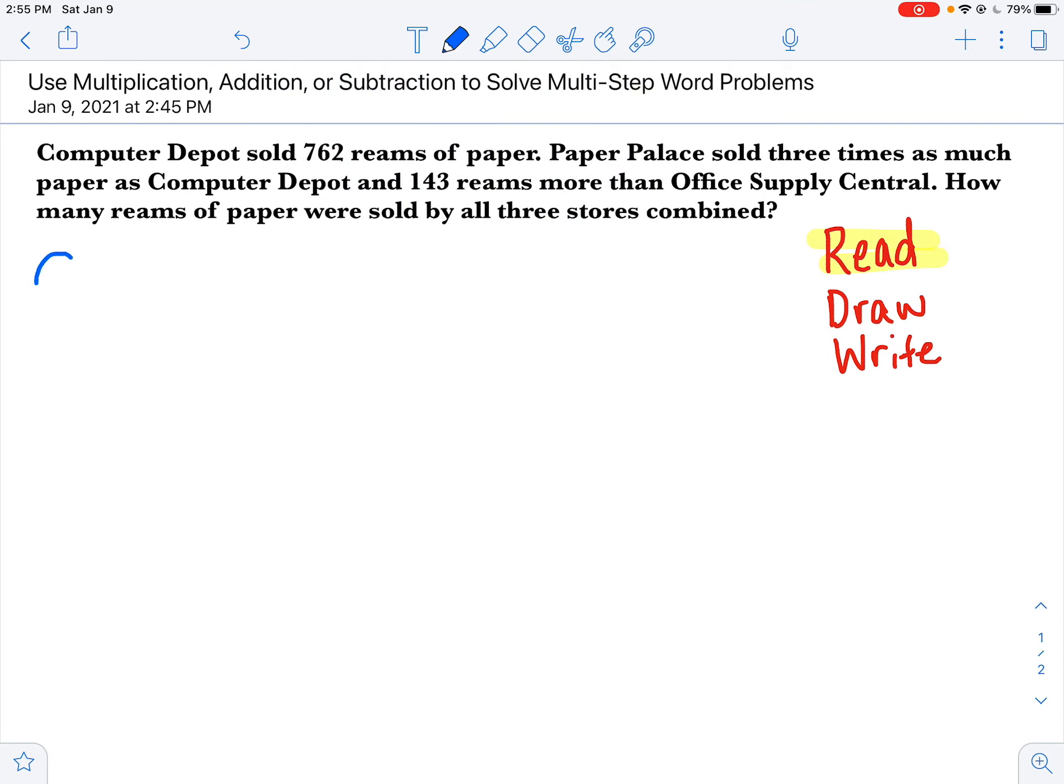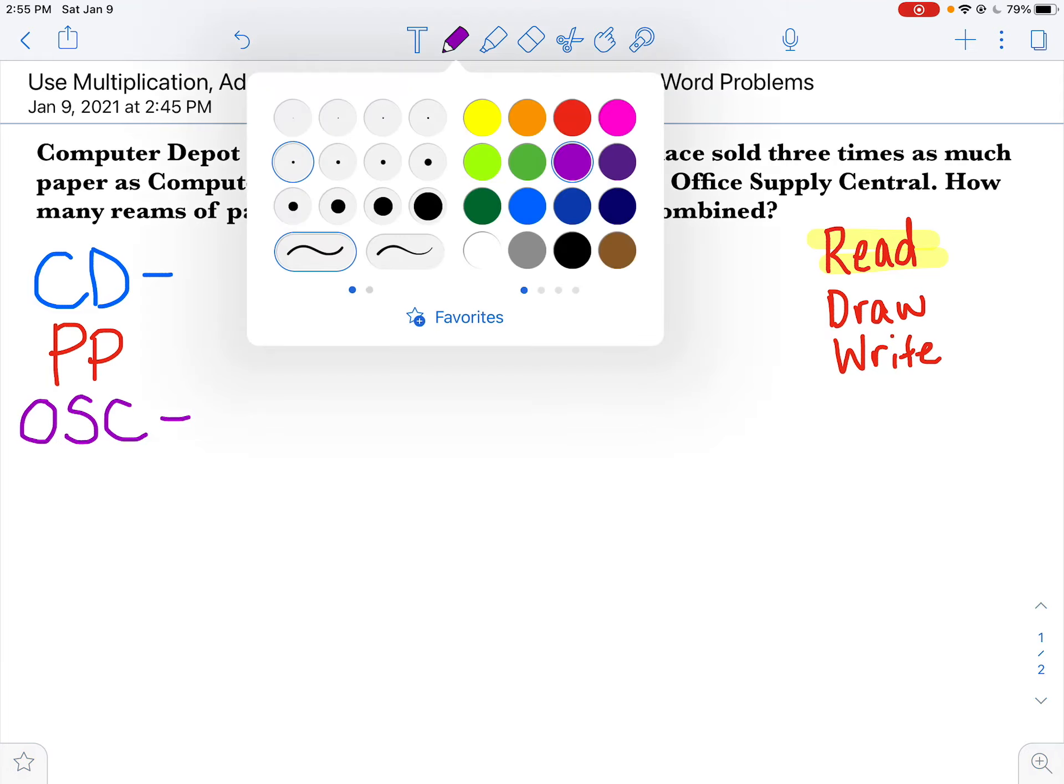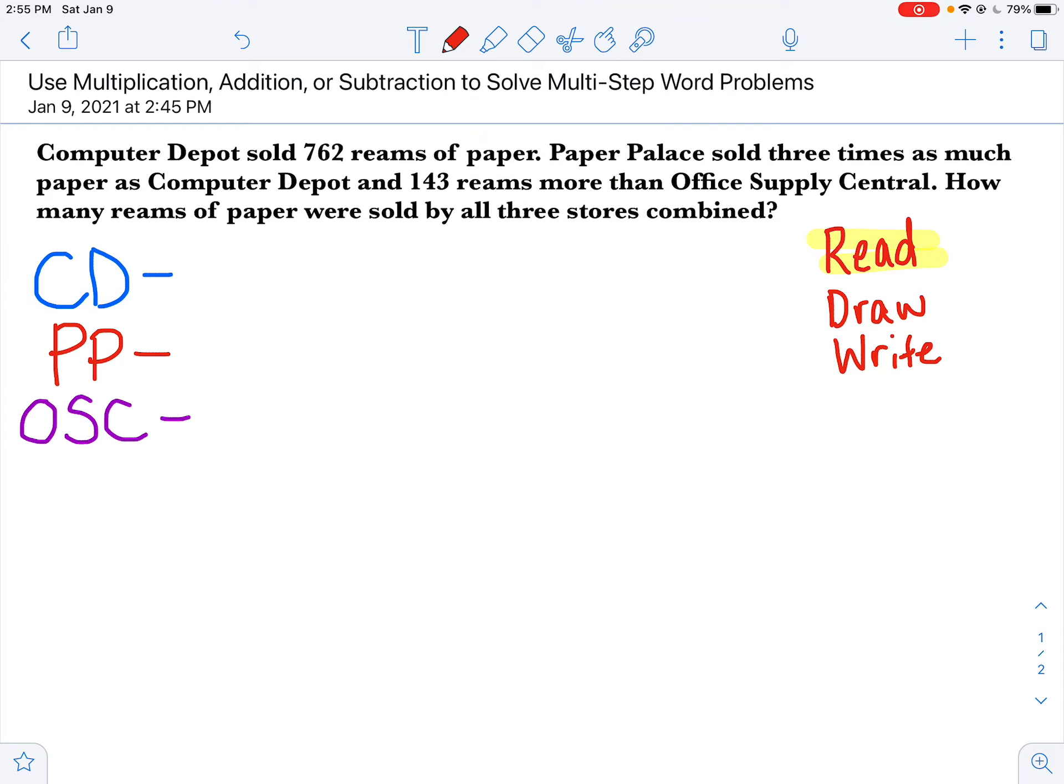I'm going to look and see what are the three stores we're talking about? Well, we've got Computer Depot. Instead of writing Computer Depot out, I'm just going to write CD. We've also got Paper Palace. And we have Office Supply Central. Okay, so I've given each of these guys sort of a little acronym, and I've labeled them in a way that I know and understand what they're going to be.